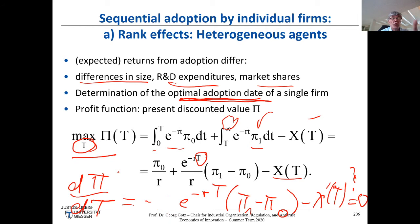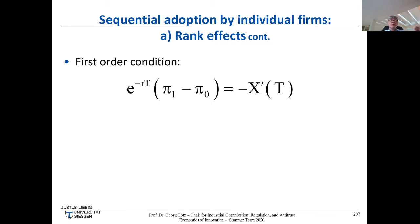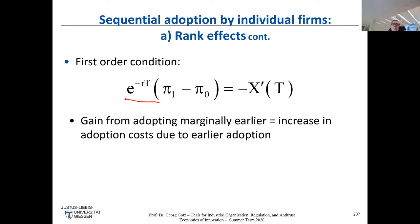This is the first-order condition. Rearranging, we get a nice interpretation that already solves your problem of when to buy a new computer. On the left-hand side is the gain from adopting marginally earlier: you now have the better computer, giving you a profit increase (π₁ - π₀). On the right-hand side is the cost: if you adopt earlier, adoption costs are higher.